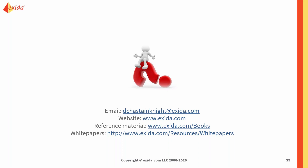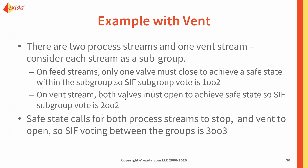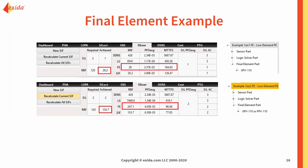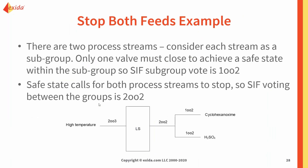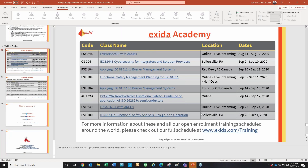Question: The calculated RRF is 107 — is it not close enough to a risk reduction factor of 120 to pass? No. Our target risk reduction factor is 120, not 112. So 107 is less than 120 and does not meet the target.